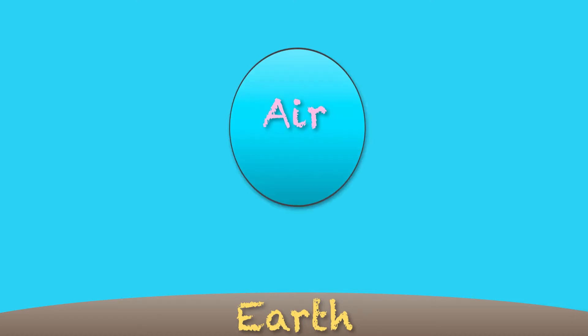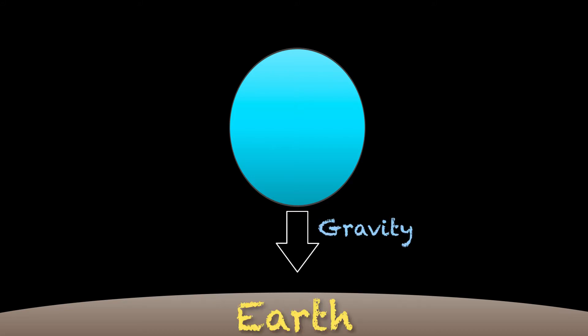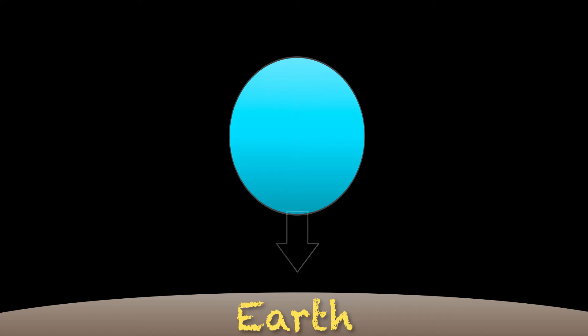Presume we enclosed the volume of air with a very light balloon, so light indeed that its weight can be ignored. The balloon will remain suspended, just like the air inside before we enclosed it. But if we somehow removed all the air from around the balloon, the force of gravity from the Earth would cause the balloon to fall down, similar to all objects.